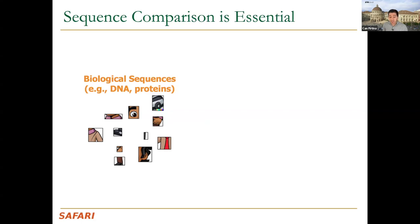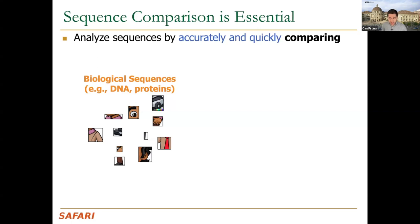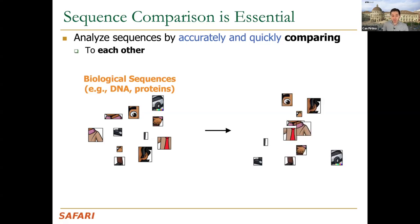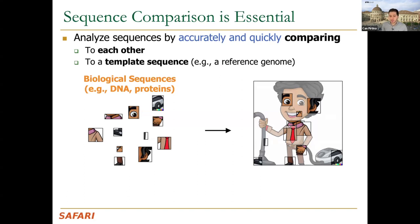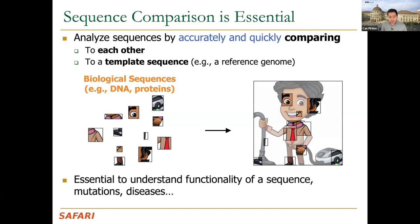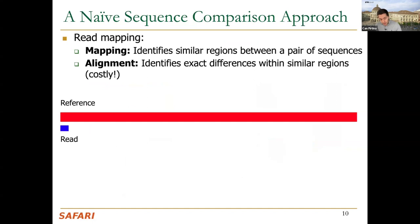Sequence comparison is at the core of genome analysis — it resolves the challenges with sequencing data. A useful puzzle-solving analogy: the goal is to accurately and quickly compare sequences, treating reads as puzzle pieces. We may compare pieces to each other, or use a reference genome as a template to figure out where each piece belongs — enabling understanding of functionality, limitations, and diseases.